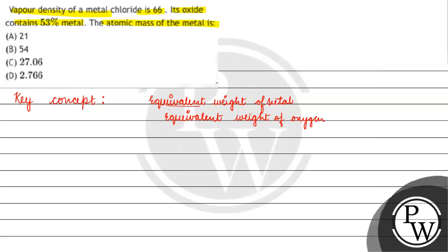Equivalent weight of metal by equivalent weight of oxygen is equal to mass of metal by mass of oxygen.